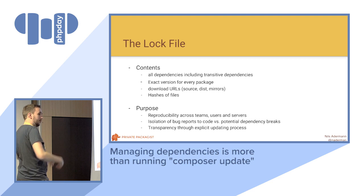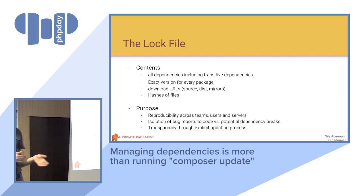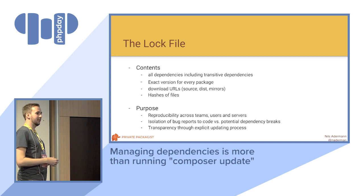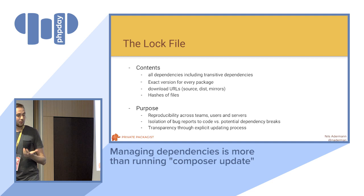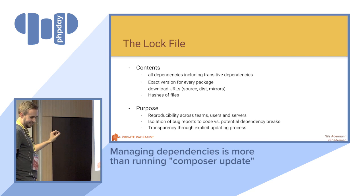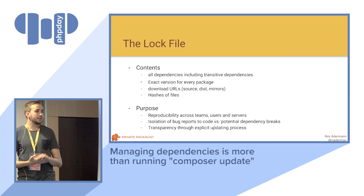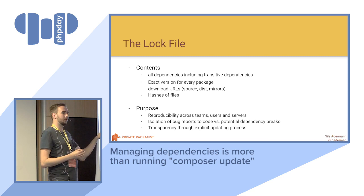Updating generates a lock file. I gave a similar talk in German a little while ago and this came up in Q&A — people said it was the best part — so I figured I'd include this here again, even though it always seems clear and obvious to me. The contents of the lock file are really straightforward: it's a list of all dependencies including transitive dependencies, with the exact version currently installed, with a download URL for their specific package — both the git URL and the zip file you can download for that particular version — and potentially mirrors if you have alternatives. For example, Private Packagist uses mirrors to make sure that if GitHub isn't available, you download from Private Packagist and vice versa. And there are hashes of the files to download to make sure those actually match up with what you expected.